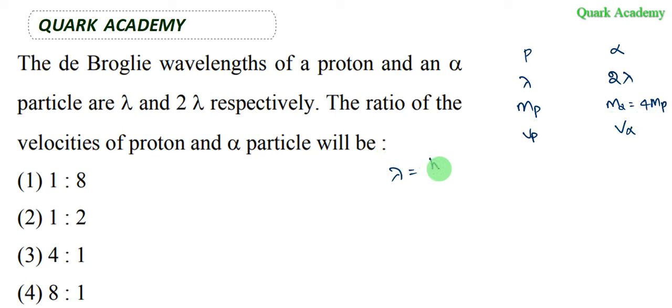The de Broglie wavelength can be written as λ = h/p, where p is momentum, which is m×v. The de Broglie wavelength of proton divided by the de Broglie wavelength of alpha particle can be written as (h/m_p×v_p) divided by (h/m_α×v_α).